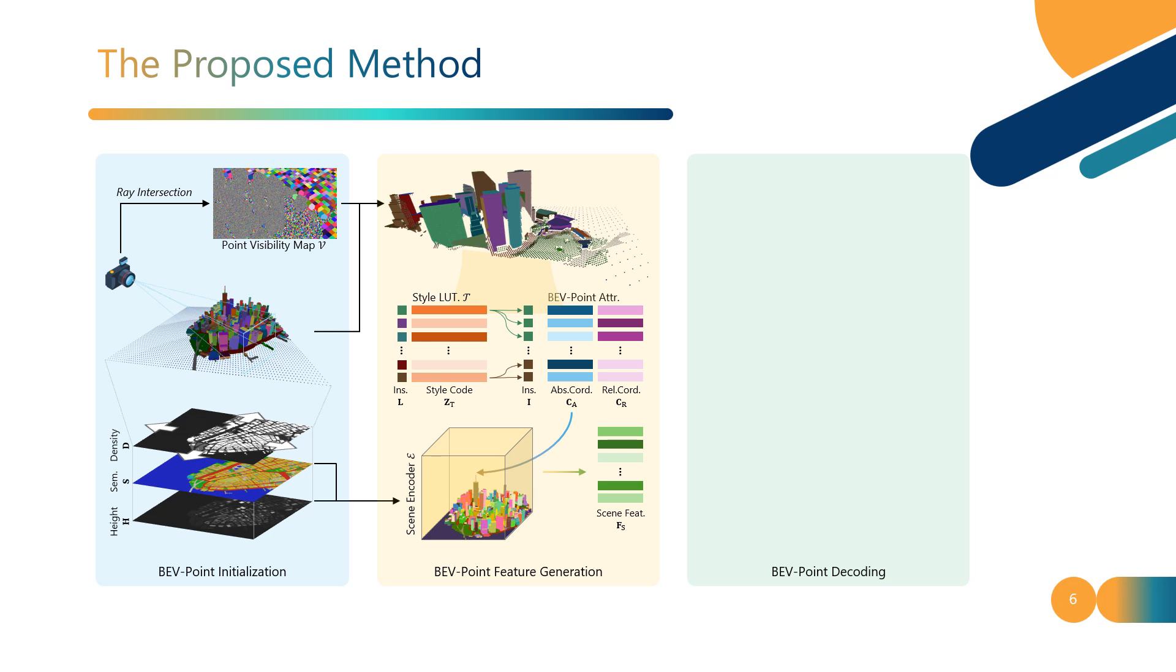Now, each BEV point is assigned with the absolute and relative coordinates CA and CR, the scene feature FS, the instance label I, and the corresponding style code ZP.